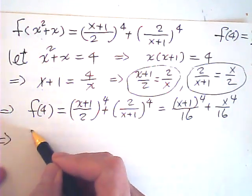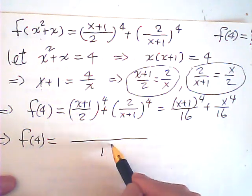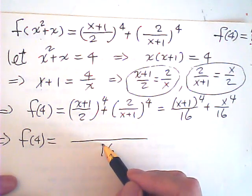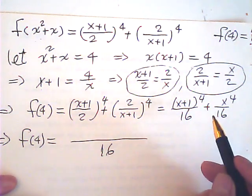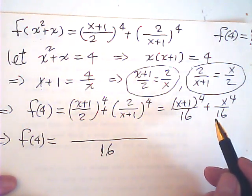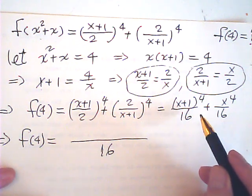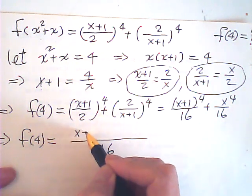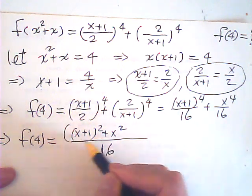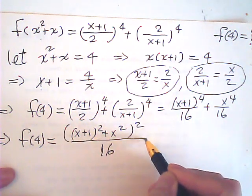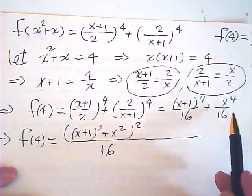Then f of 4 is equal to 1 over 16 with common denominator. Now this plus that, I can consider that (x plus 1) square plus x square together squared. So this square is this, this square is that.